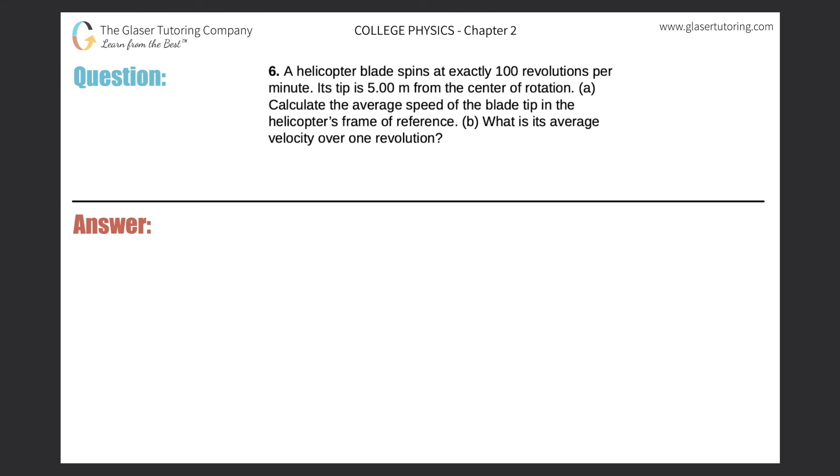Number six: A helicopter blade spins at exactly 100 revolutions per minute. Its tip is five meters from the center of rotation. Part A: Calculate the average speed of the blade tip in the helicopter's frame of reference. Let's draw a picture. There's this blade going around in a circle. The blade's tip would be somewhere out here, and it says the tip of the blade is 5.00 meters from the center of rotation. The problem also tells us this blade will make 100 revolutions per minute.